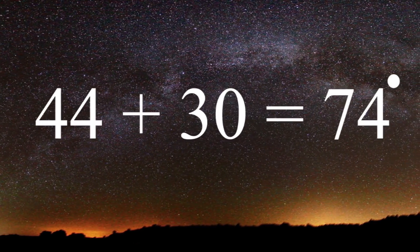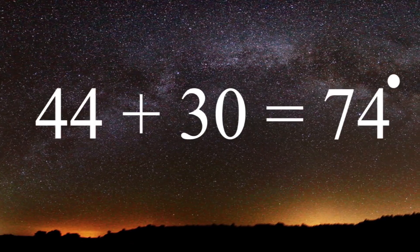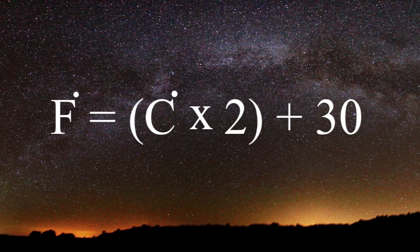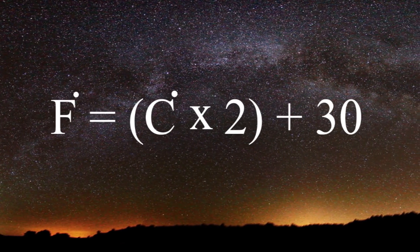If you add 30 to the temperature, it would be 74 degrees Fahrenheit. The formula? Celsius temperature multiply by 2 add 30.